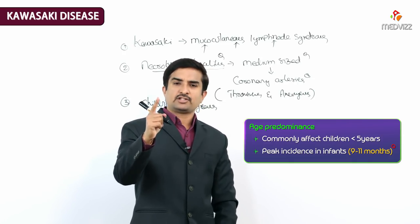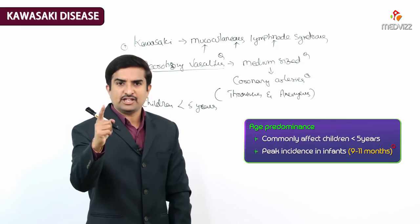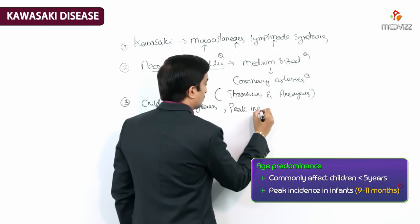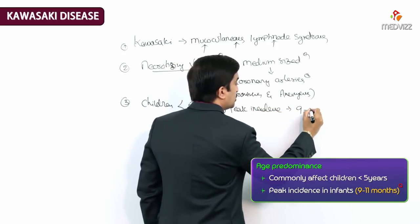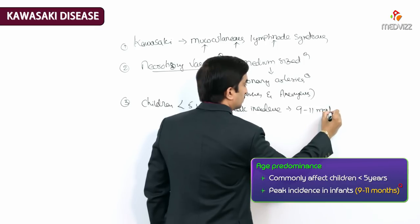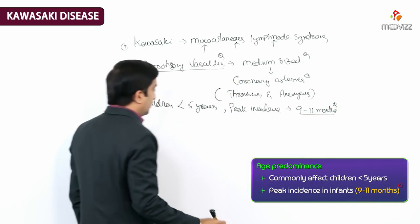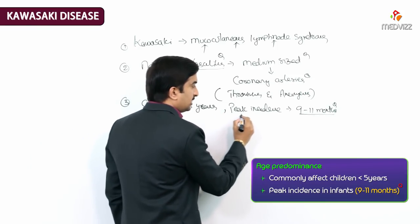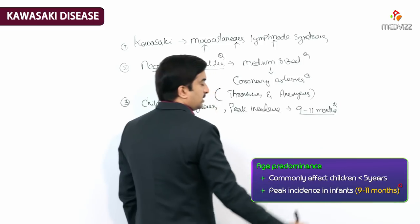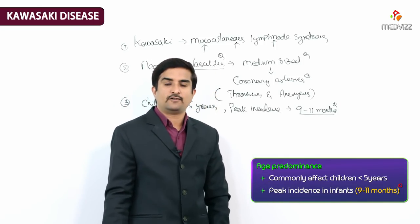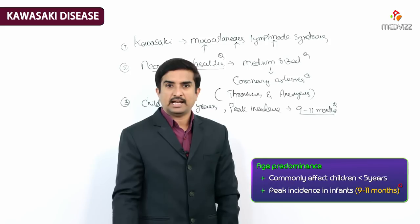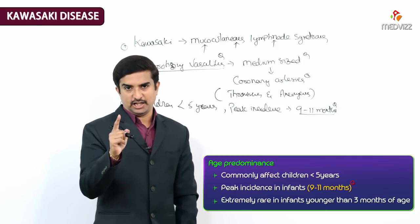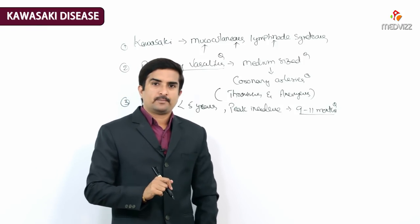The peak incidence of the disease is seen in infants aged 9 to 11 months — this is an important MCQ point. Even though it is seen in children less than five years of age, the peak incidence is between 9 to 11 months. It is extremely rare in infants younger than 3 months of age.